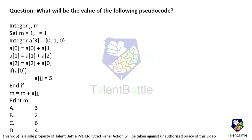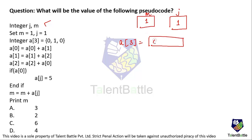Let's move on to the next question. What will be the value of the following pseudocode? Two integer variables are given: j equals 1 and m equals 1. We also have an array a of size 3 which equals {0, 1, 0}. According to index position: a[0], a[1], and a[2]. We then calculate a[0], a[1], and a[2] based on previous values and check a condition.